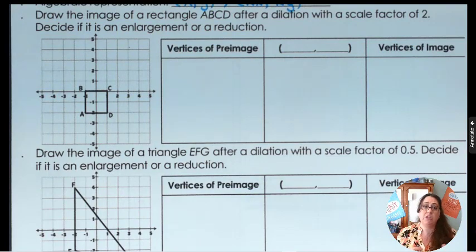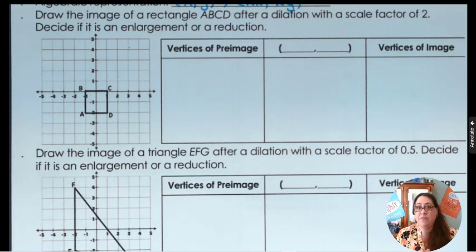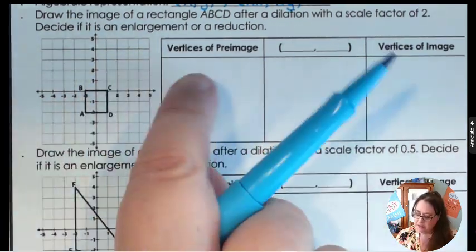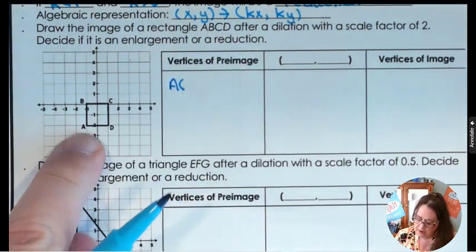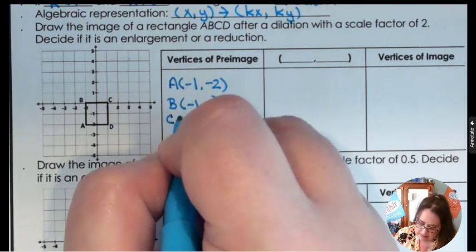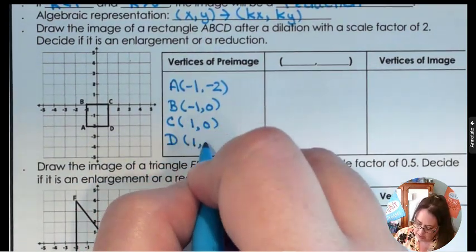We're going to look at pre-image rectangle ABCD and make image rectangle A'B'C'D' after dilating it with a scale factor of 2. First let's find the vertices of the pre-image: A is (-1, -2), B is (-1, 0), C is (1, 0), and D is (1, -2).